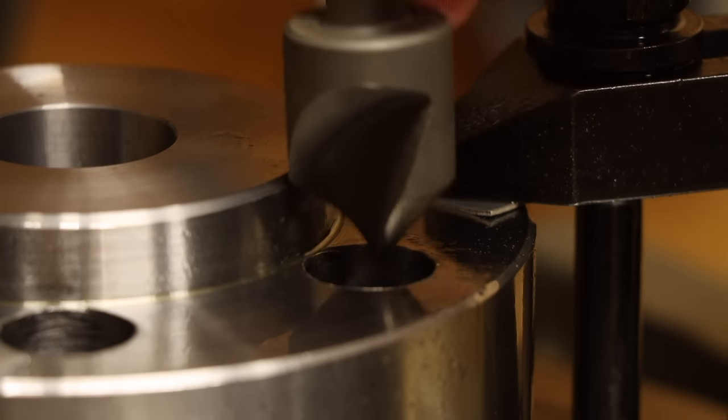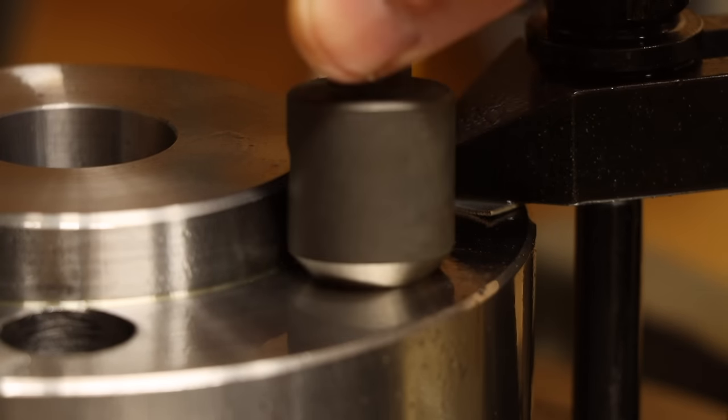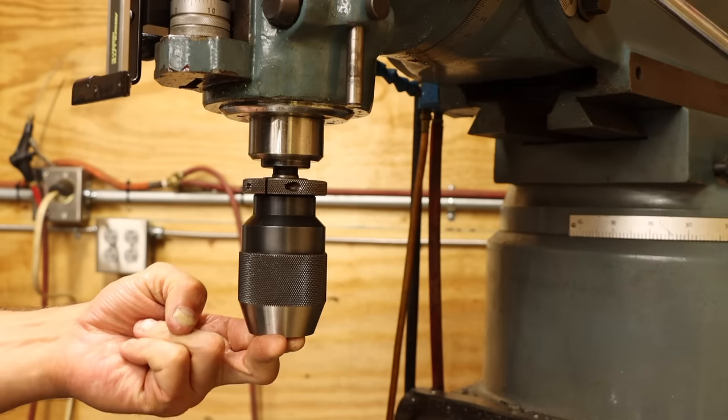I'd like to drop a chamfer on each of these, but being so close to the tapered boss, there isn't room to get in here. So a simple deburr will have to suffice.